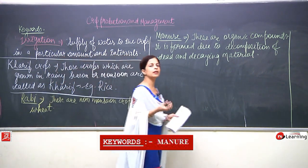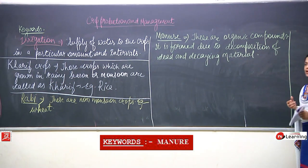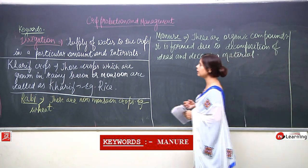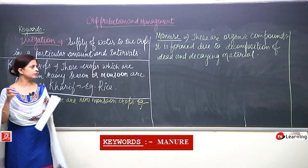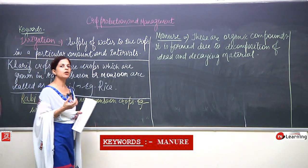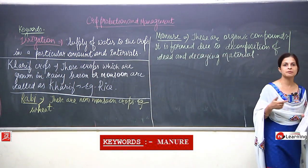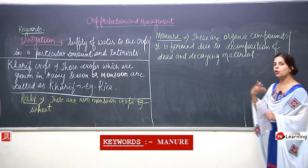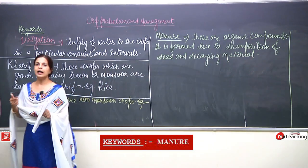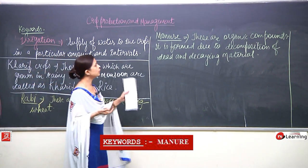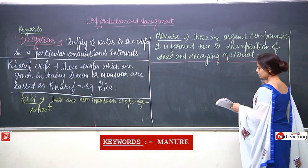Plants take more time to absorb manure, and results are delayed — you can see the results only in the long run. In contrast, fertilizers give very fast results. Manures are not nutrient-specific; they provide overall nutrients to the soil, whereas fertilizers are nutrient-specific.